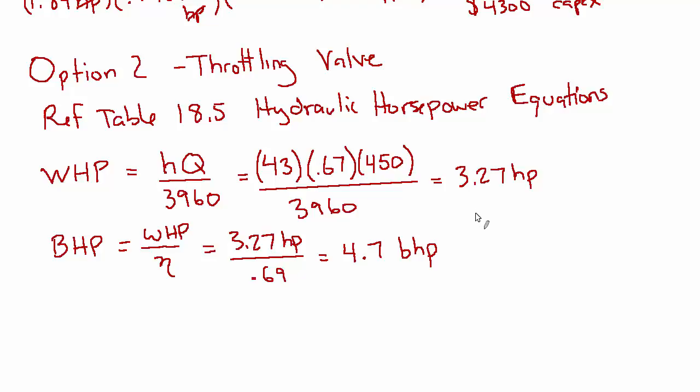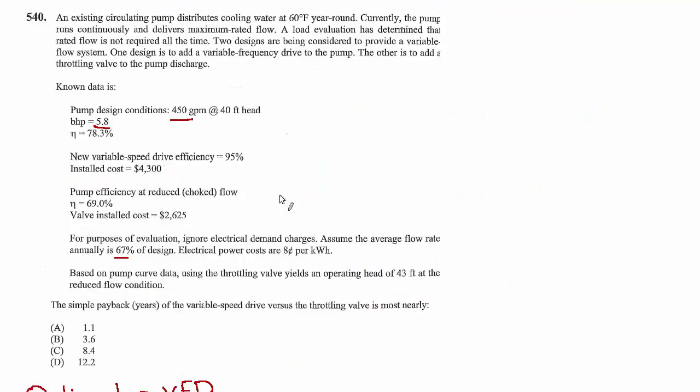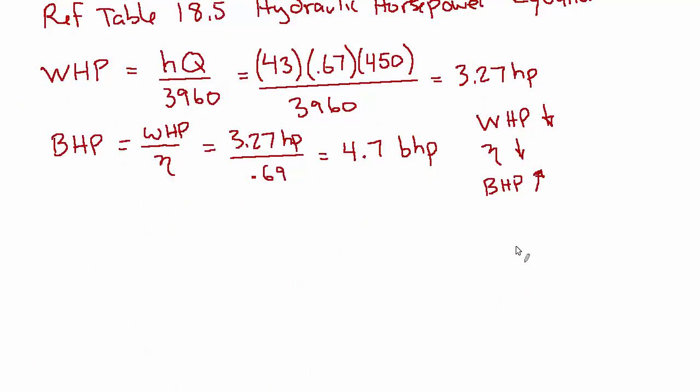So again, as we came from the original design, the water horsepower went down. If that wasn't the case, then we wouldn't do the project because there wouldn't be savings. But unfortunately, the efficiency also went down, which means that the brake horsepower went up from what it would have been. But it's still less than 5.8. And that's the key. It's still worth it. It's just a matter of which option is more worth it.